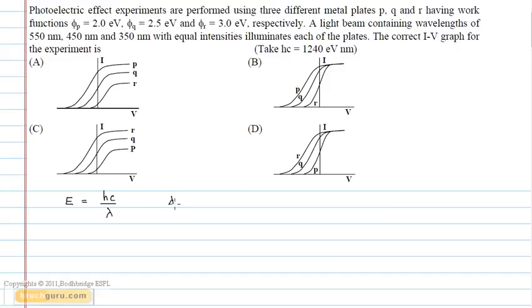For the first case, lambda is equal to 550 nm. Substituting this value, we get E1 is equal to 2.25 eV.